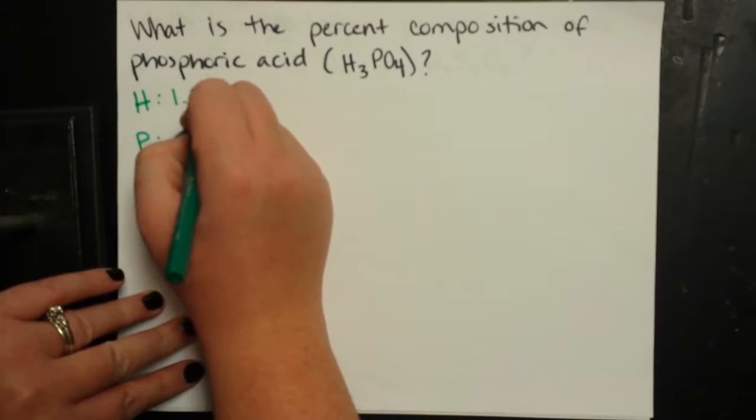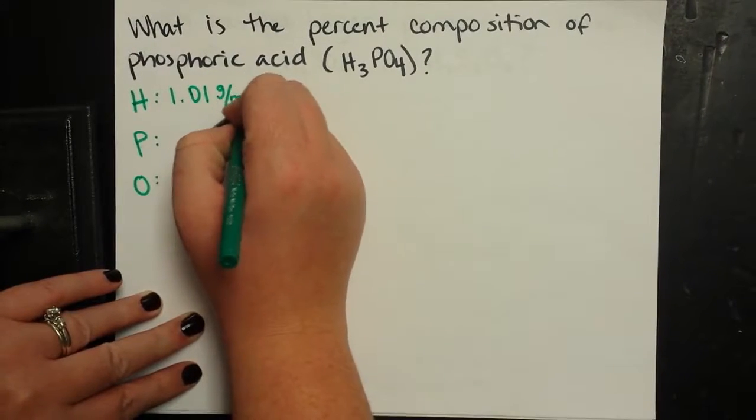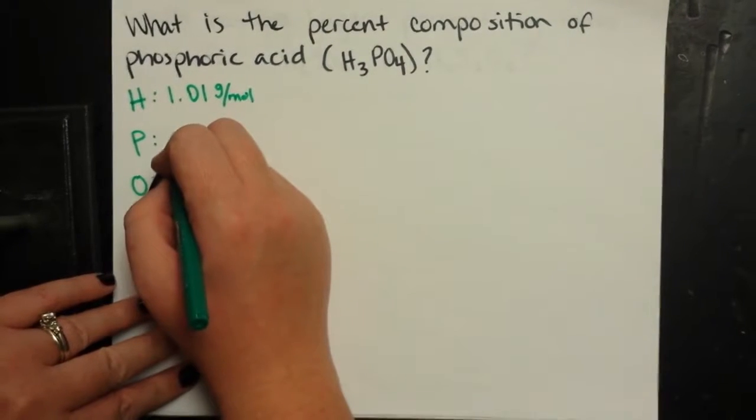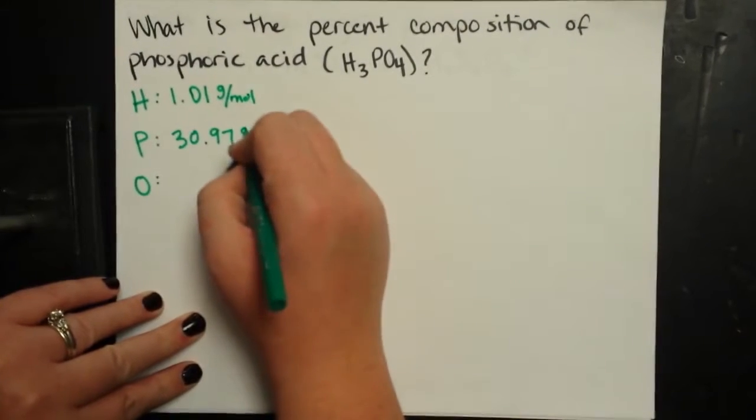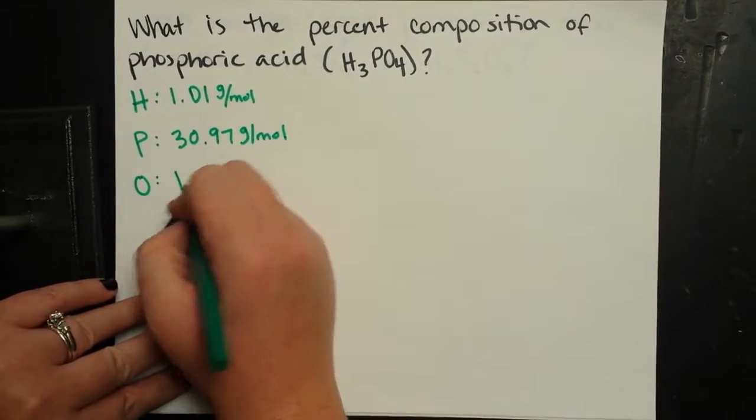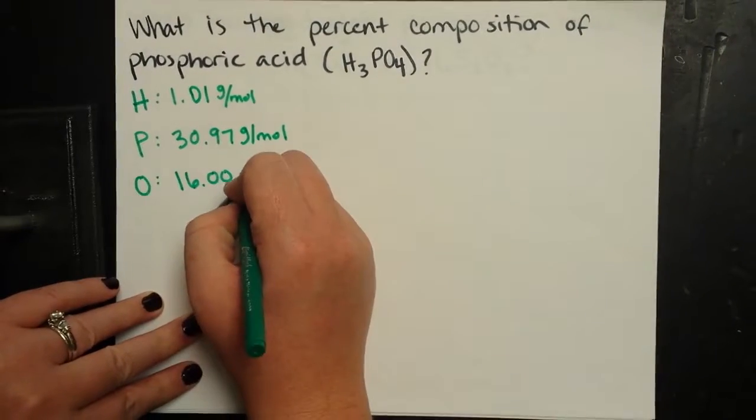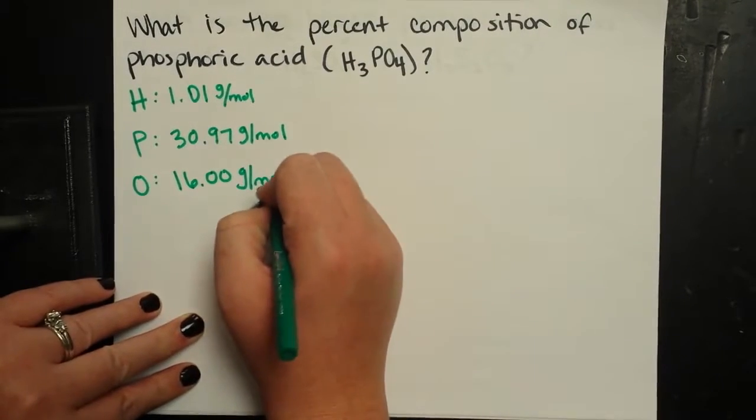Hydrogen's molar mass is 1.01 grams per mole. Phosphorus's molar mass is 30.97 grams per mole. And oxygen's is 16.00 grams per mole.